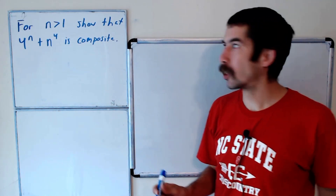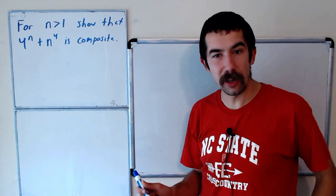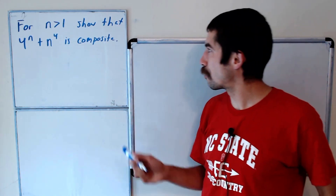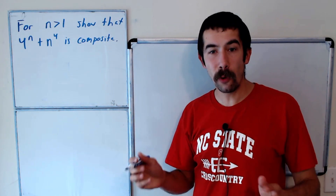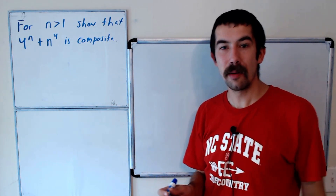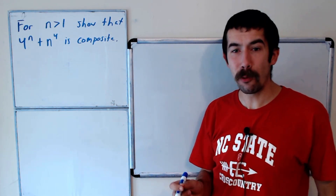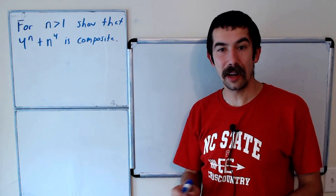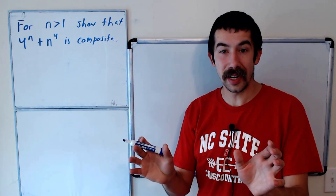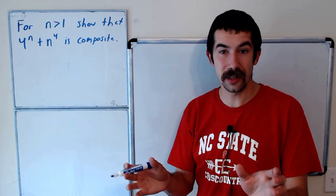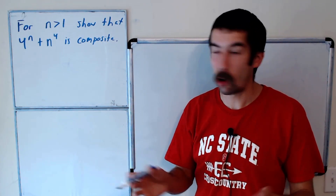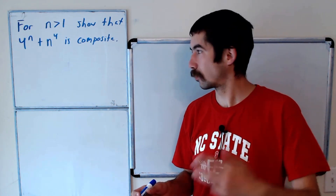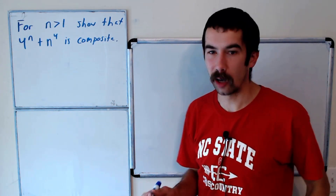We have a number theory problem from the University of Toronto. For n greater than 1, show that 4 to the n plus n to the 4 is composite — meaning we can factor it into two factors where neither of them is 1. Try it on your own, or you can just watch me solve it.